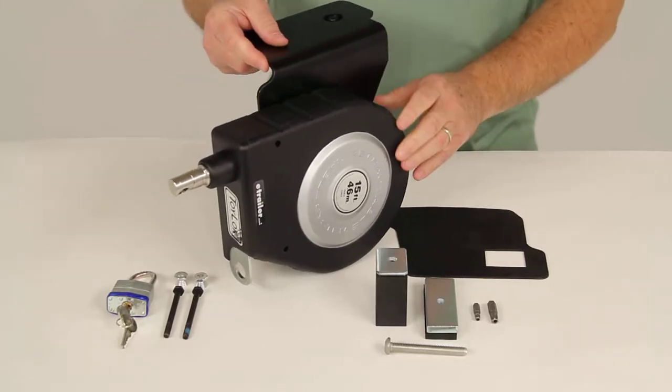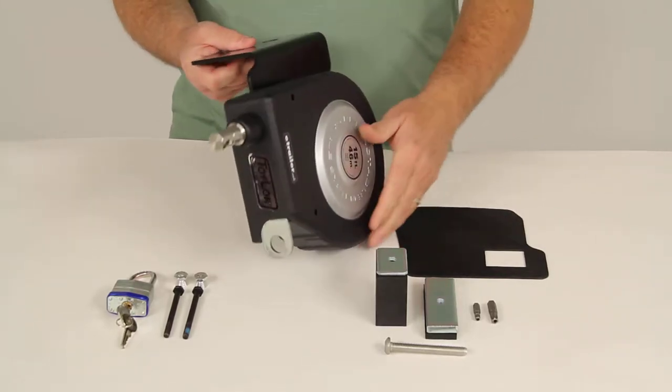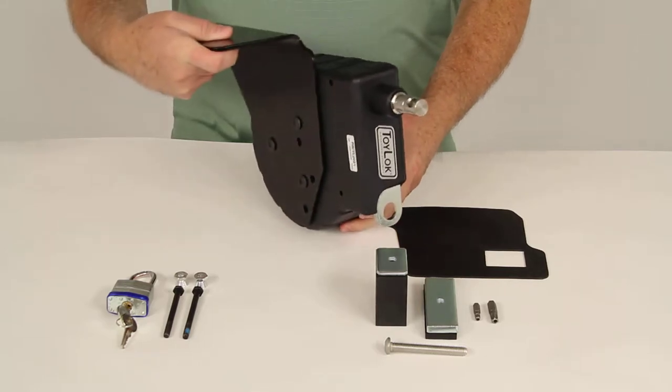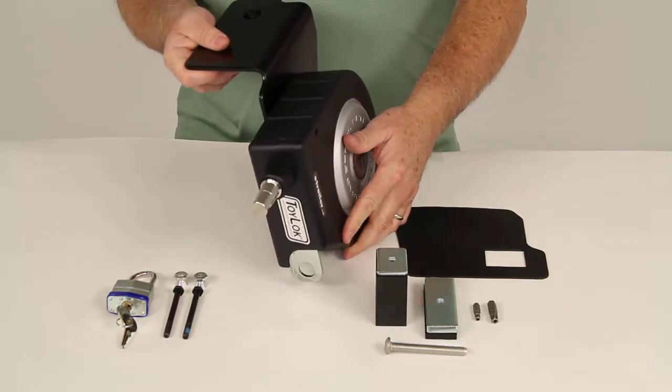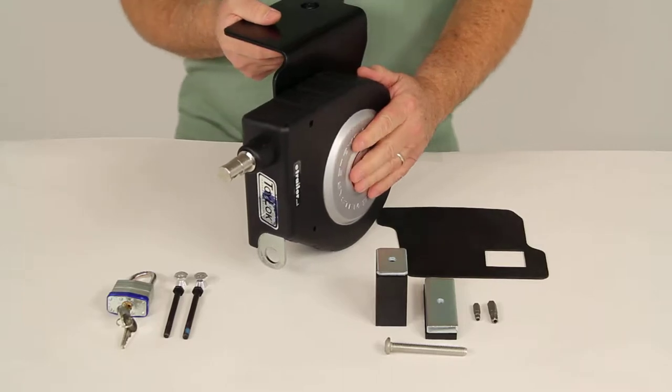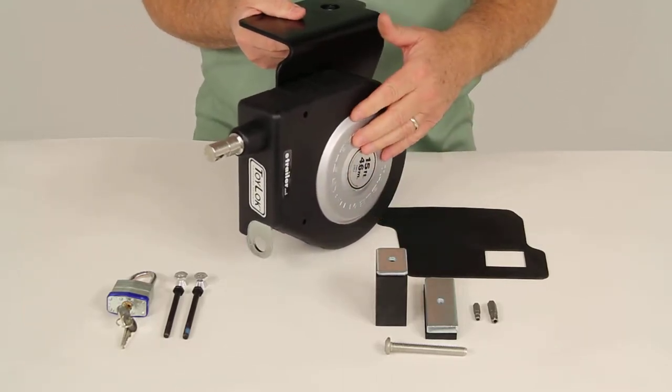Today we're going to review part number LC337120-337112, and this is the Lippert Toy Lock Stake Pocket Mounted Retractable Cable Lock. It has 15 feet of cable in it.